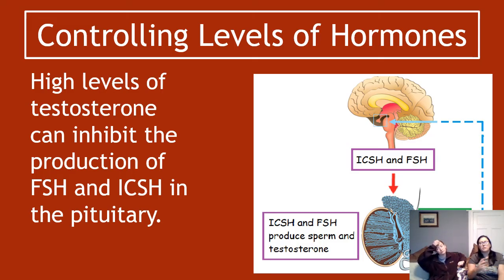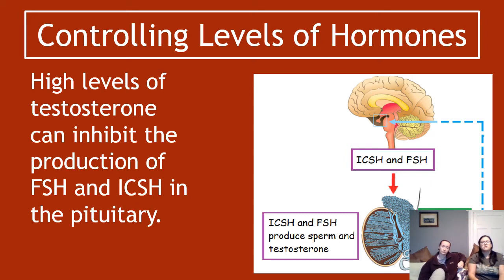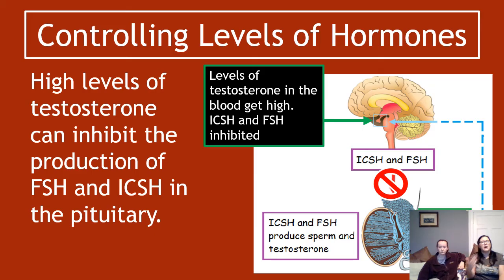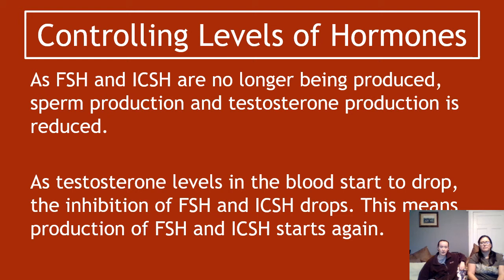Now we look at how the body prevents too much testosterone, too much ICSH, or too much FSH — and therefore too much sperm. High levels of testosterone can inhibit the production of FSH and ICSH in the pituitary gland. Since blood flows through the brain as well, testosterone can bind to receptors on the pituitary gland and prevent the production of both ICSH and FSH.